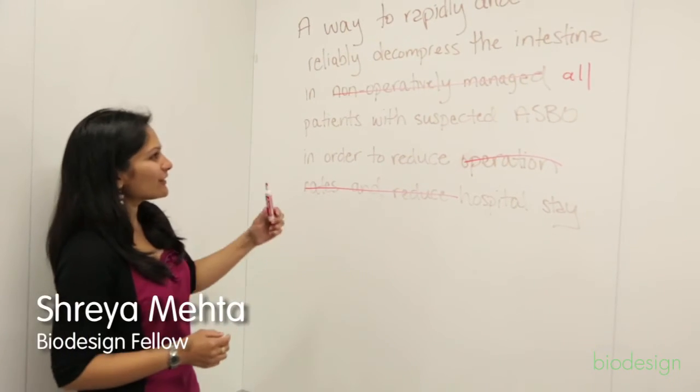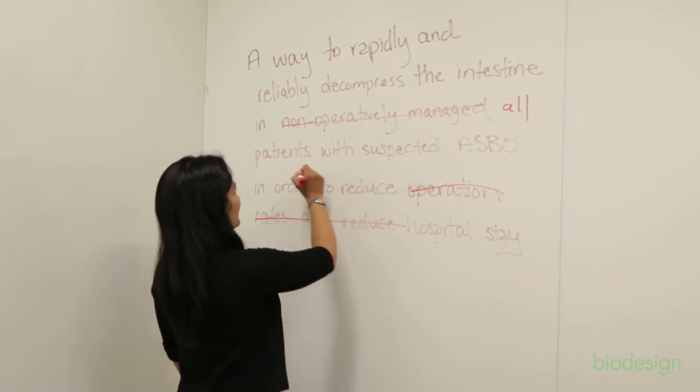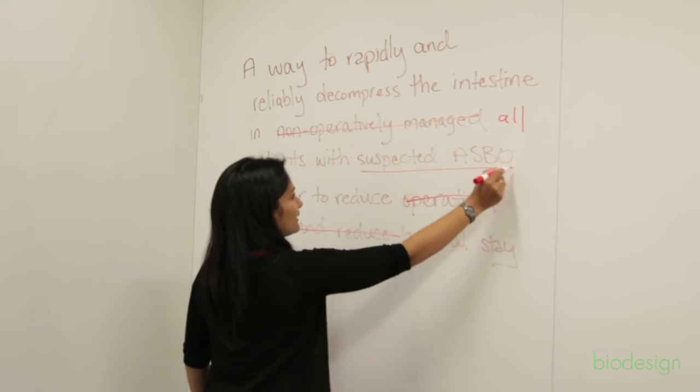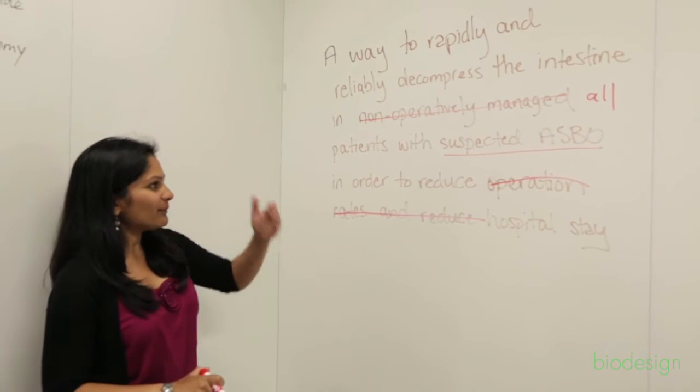Another way that you could target a different scoping is to look at—we looked at patients with suspected adhesional bowel obstructions—and we could scope it up by including all the patients who present to the ER with abdominal pain instead of just those with adhesional bowel obstructions.